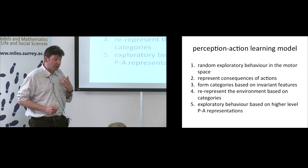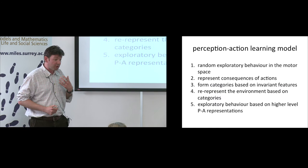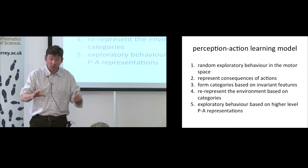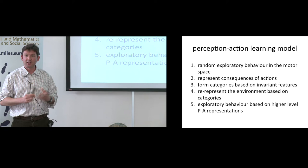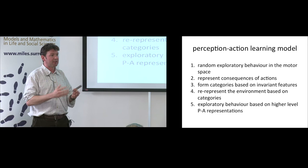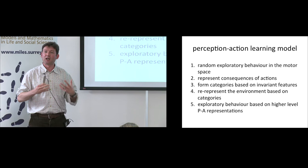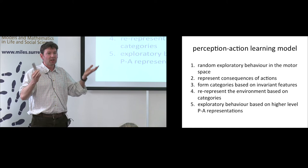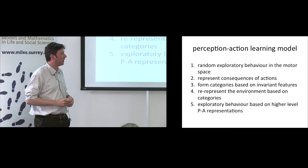We tried to build a model of perception-action within this general human cognitive architecture. To do this, we get ACT-R to follow the general principles of perception-action learning: first, make random exploratory motor movements in the world — just grabbing things to see what happens. It then observes the consequences of those actions and develops categories based on what invariant features those are. For example, if every time it sees a teacup it is blue, it starts forming a category of blue teacups. It then re-represents the world based on these higher-order categories, building up toward a more abstract understanding of the world.